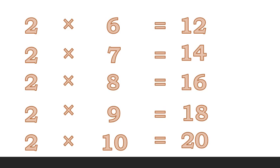Now we will repeat it again. Two sixes are twelve. Two sevens are fourteen. Two eights are sixteen. Two nines are eighteen. Two tens are twenty.